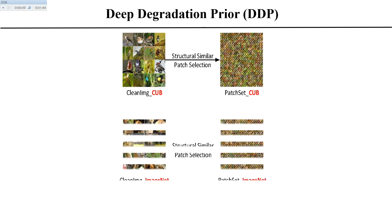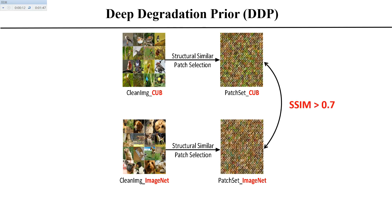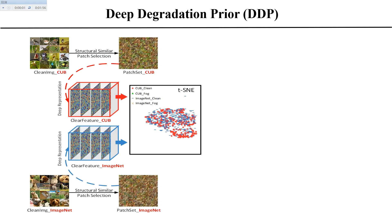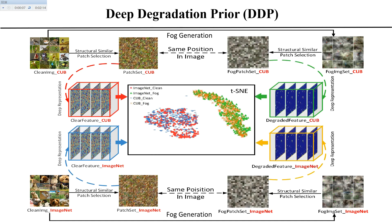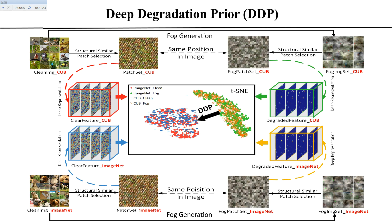In this paper, we propose a novel deep degradation prior for low-quality image classification, which mainly contains three aspects. First, we find that there exist hundreds of structurally similar patches in different images — the high-quality images are from CUB and ImageNet respectively, which have different semantic labels. Second, if structurally similar patches share a similar distribution in the feature embedding space, they result in an indistinguishable cluster as shown in the TSNE map. In addition, the corresponding degraded image patches also have a similar property, while they are separated from the feature distribution of clear patches. Third, if we can learn a mapping between the degraded features and the clear features, it could be used for arbitrary natural images.